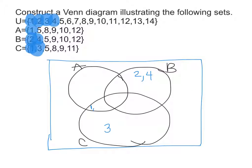The number five is in the universal set and it is in A, B, and C — all three regions. So we're going to put that right in the middle where all three circles overlap. The number six occurs in the universal set, but not in A, B, or C, so it's not in any of the circles and we need to put it on the outside. We'll have the same scenario for the number seven — it does not appear in A, B, or C, so it goes on the outside.